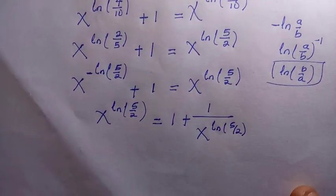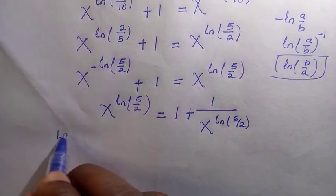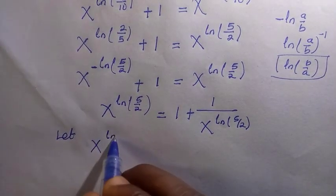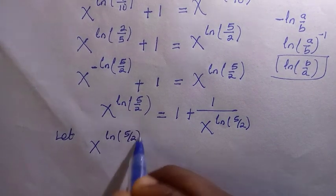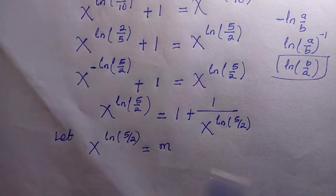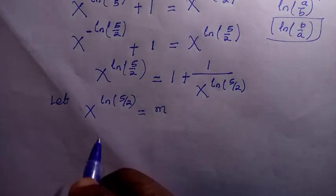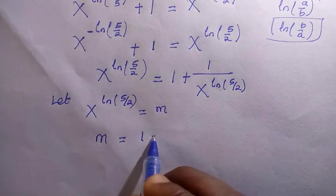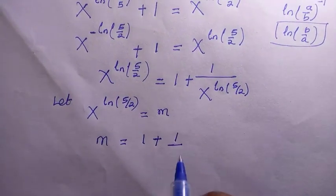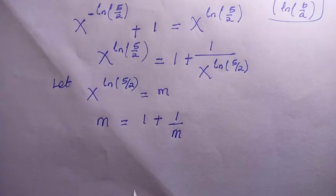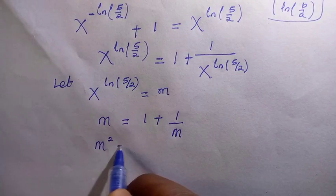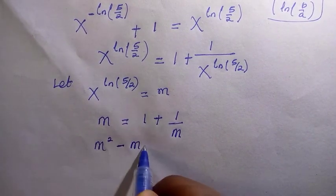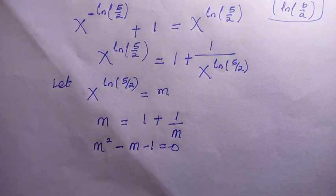At this stage, I let x raised to the power of ln(5/2) equal to m, to make the work easier. Then we have m equals 1 plus 1 divided by m. Multiplying through by m and collecting like terms gives m squared minus m minus 1 equals 0.